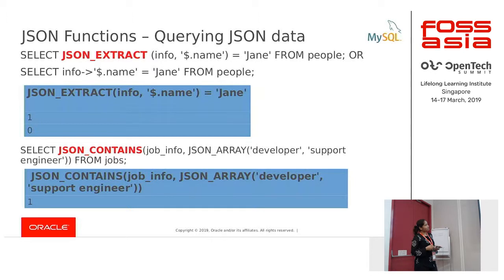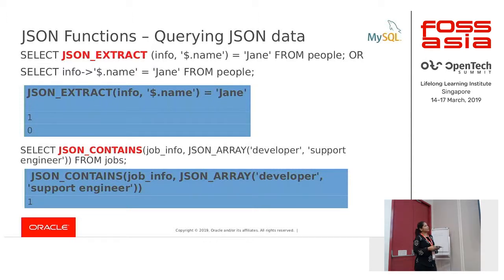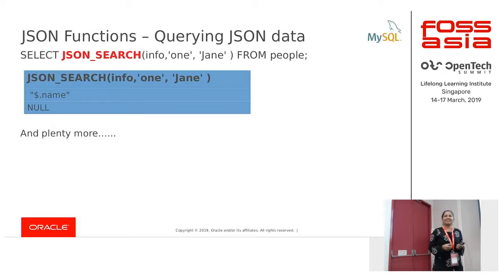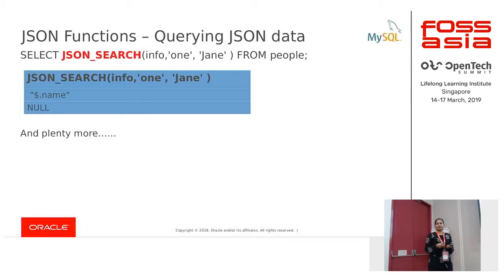The next function is JSON_CONTAINS, which tells whether a particular value is found inside a document. For example, given a JSON array with 'developer' and 'support engineer' from our job_info, you get a 1 — it returns true or false whether a particular value is found in the document. The next is JSON_SEARCH, which helps you find a path for a particular value. If you're searching for a person named Jane in a JSON document, it returns the path. The first document had Jane, so you get the path; the second did not have it. You can specify 'one' to return immediately after finding the first path, or 'all' to search every path and return all paths to the document.